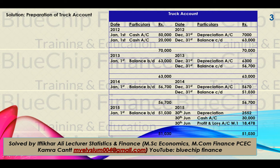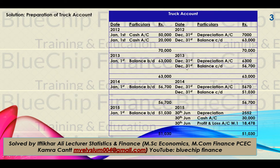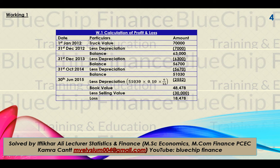Now we will calculate either profit or loss. The working is as follows: the truck value was 70,000, less first-year depreciation 7,000, second year 6,300, third year 5,670, and six-month depreciation for 2015 of 2,552. Subtracting all these depreciations: 7,000 + 6,300 + 5,670 + 2,552. The remaining book value on 30th June 2015 was 48,478.